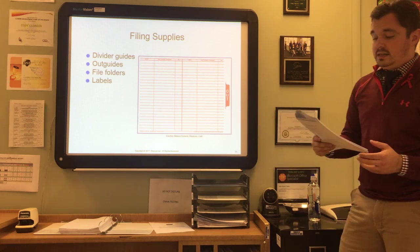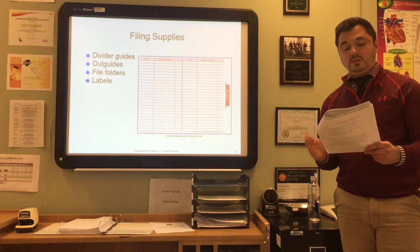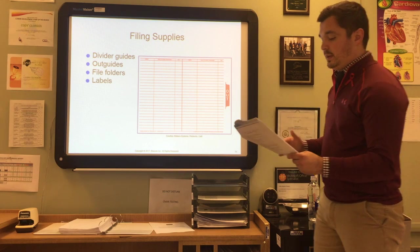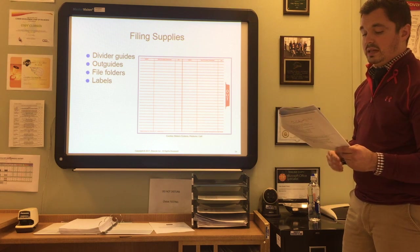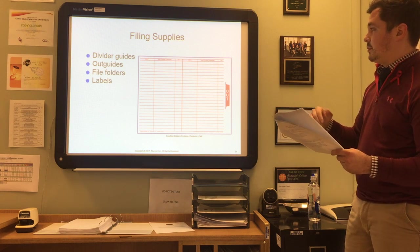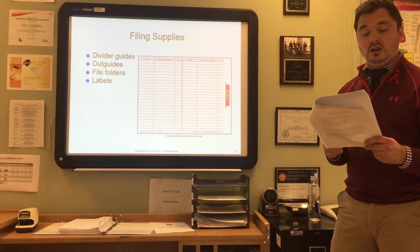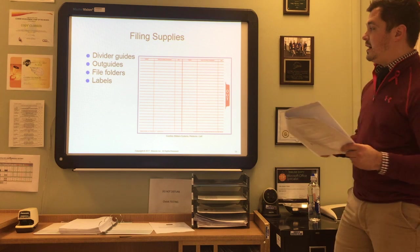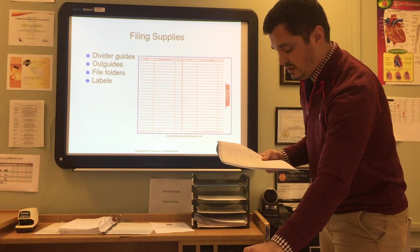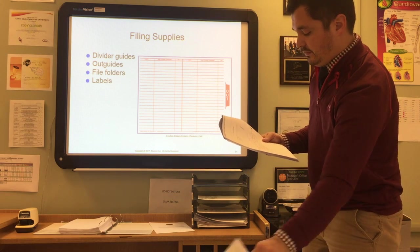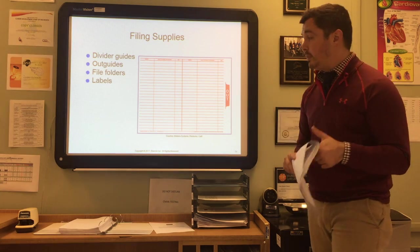Each file drawer or shelf should be equipped with plenty of dividers and guides. The out guide is a heavy guide used to replace a folder that has been removed temporarily. Labels are a necessary filing and finding device used for identifying each shelf, drawer, driver guide, and folder. Refer to procedure 12.3 on page 218 in the text to understand how to create and organize a patient paper health record.